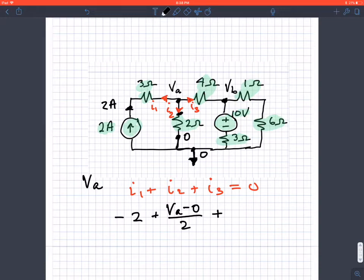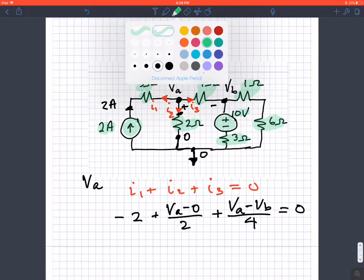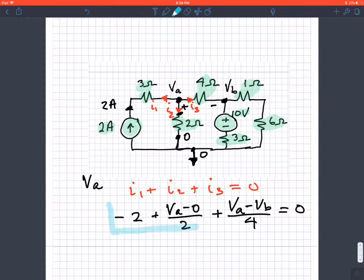I3 is the current through the 4-ohm resistor. The voltage across is VA plus and VB minus, so it's VA minus VB divided by four. That's all the currents, so that equals zero. That's the first node voltage equation at VA.